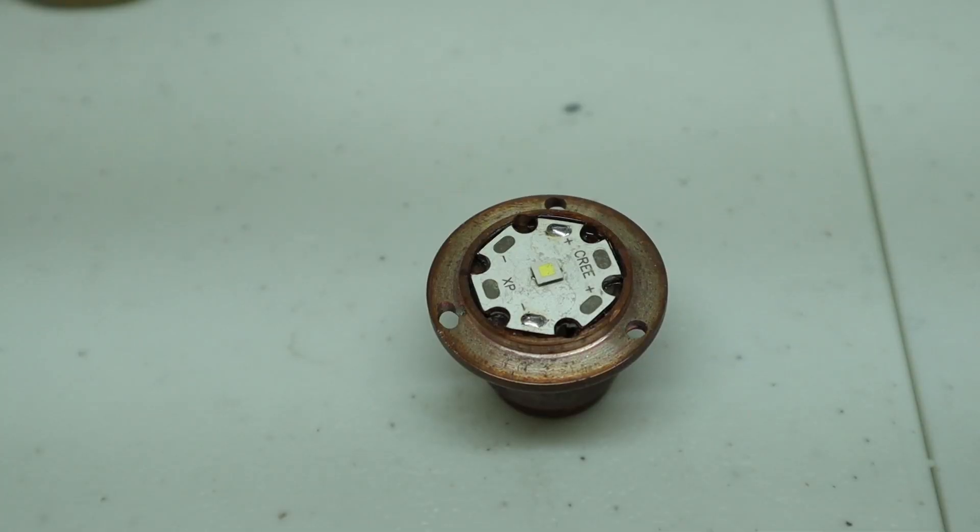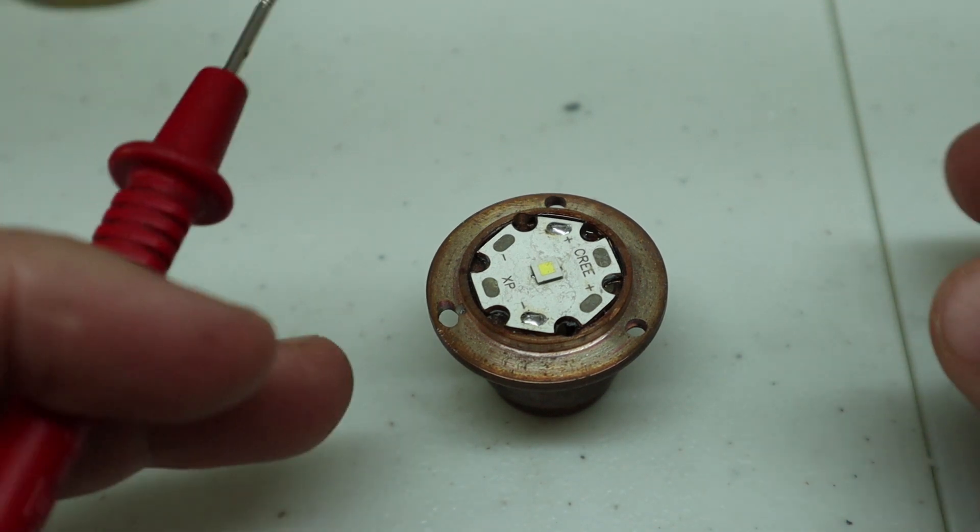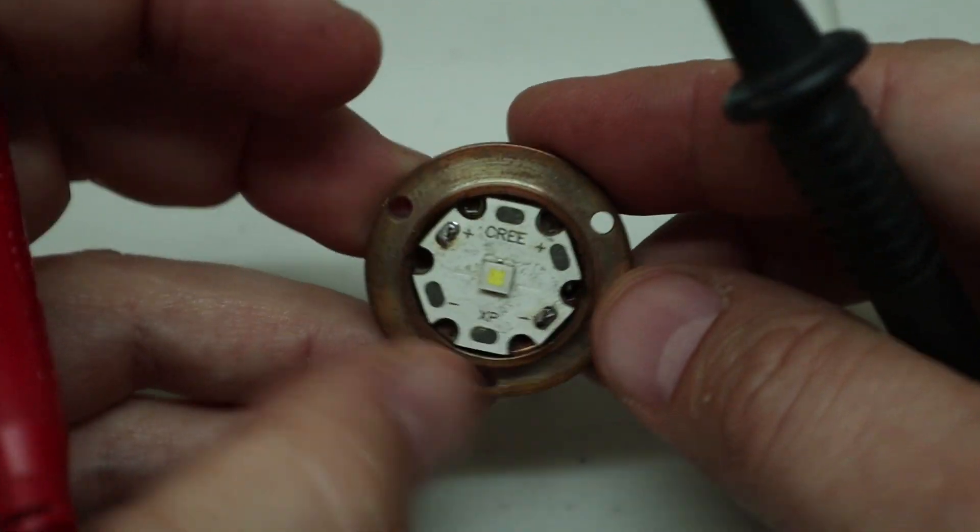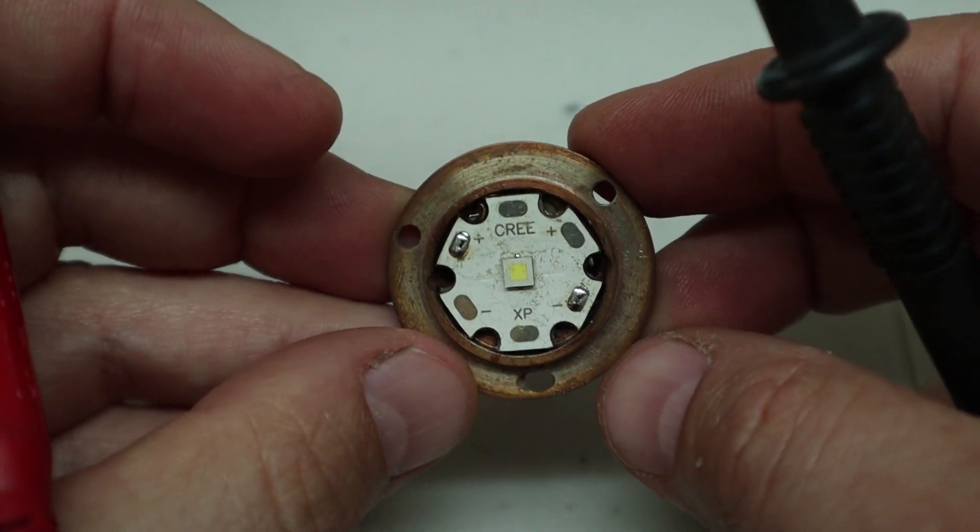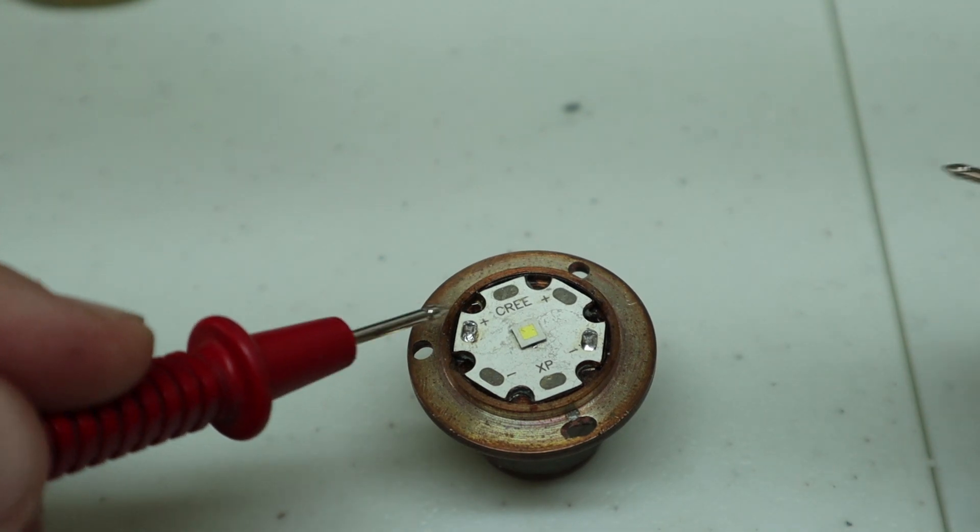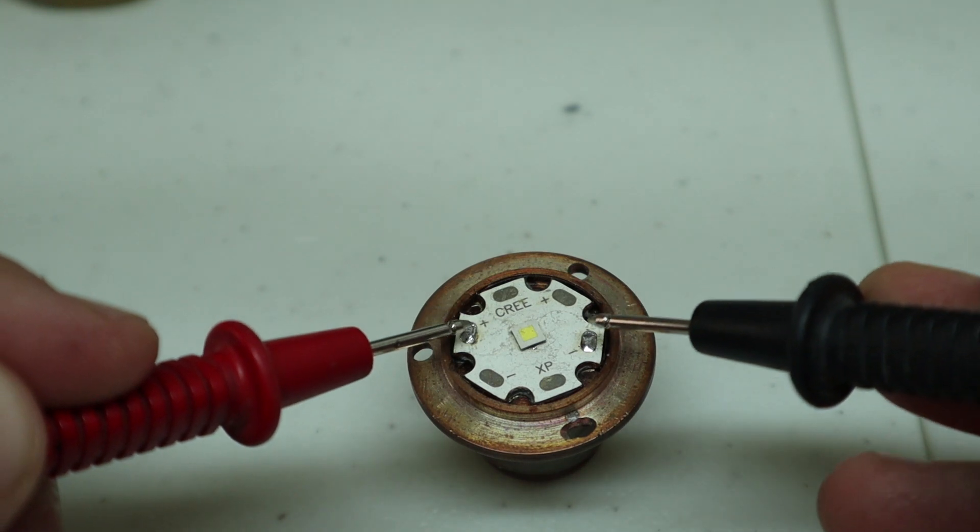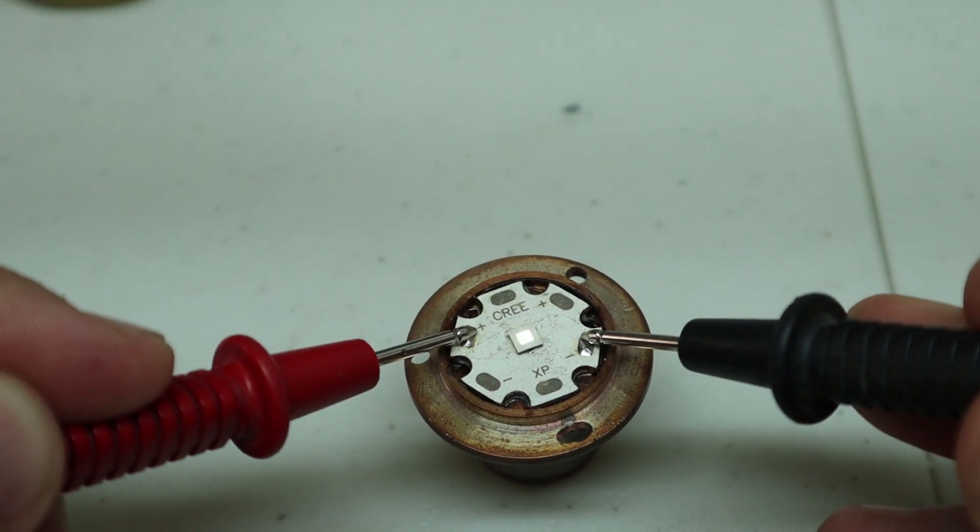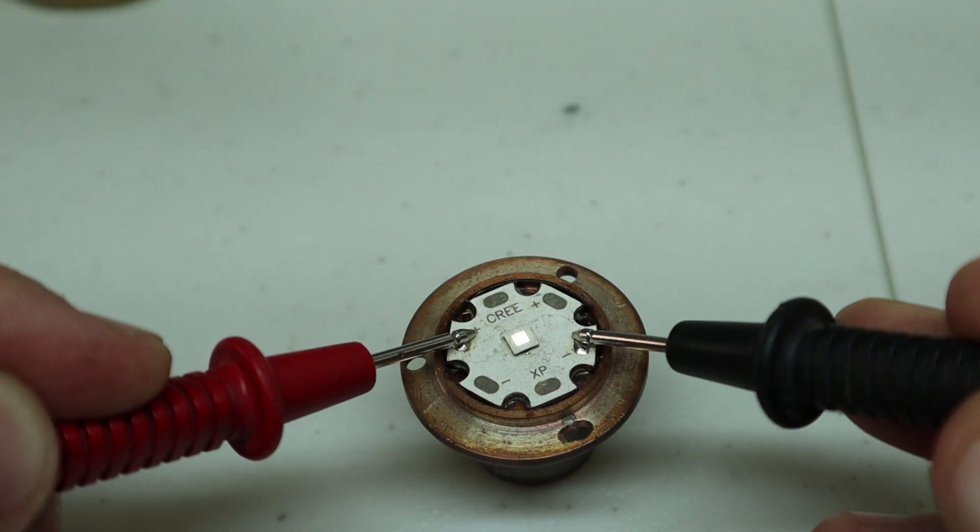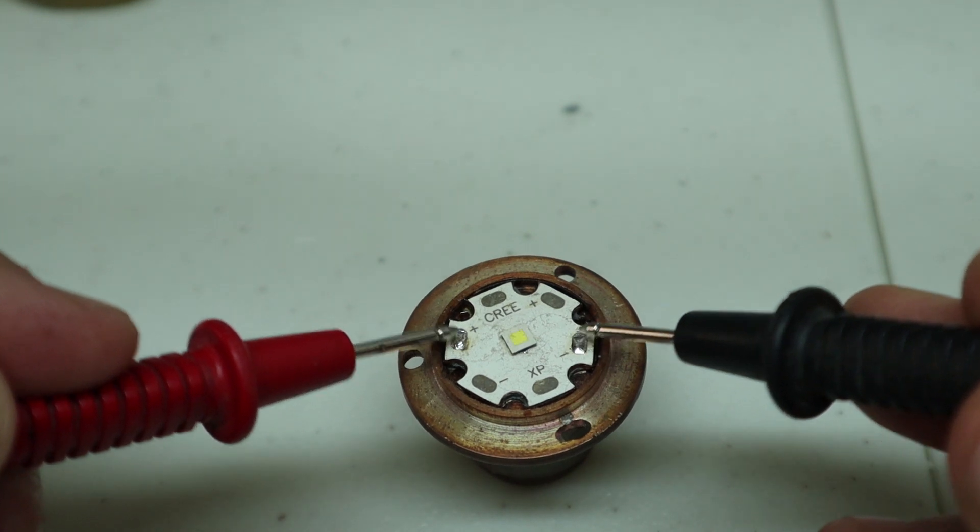One last little trick with our meter still set to continuity is you can test any 3 volt LED to see if it's good with this, just by putting your positive lead to the positive and negative to negative. It has enough voltage to light up an XPG, XPL. It won't work with a six volt, but it's an easy way to know if your emitter's the problem in a situation.